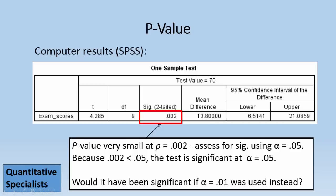Now before we close, ask yourself, would it have been significant if alpha .01 was used? Well, since .002 is less than .01, the test would be significant if an alpha .01 was used as well. OK, that's it. Thanks for watching.